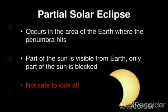After total solar eclipse, let's learn about partial solar eclipse. It occurs in the area of the earth where the penumbra hits. Part of the sun is visible from the earth — only part of the sun is blocked. This solar eclipse is not safe to look at.